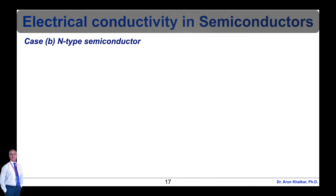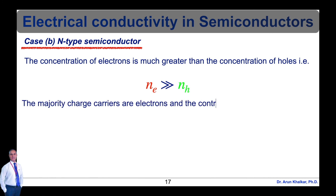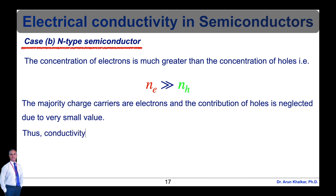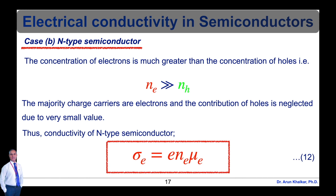Case B — N-type semiconductor: the concentration of electrons is much greater than the concentration of holes, so n_e >> n_h. The majority charge carriers are electrons, and the contribution of holes is neglected due to its very small value. Therefore, the conductivity of an N-type semiconductor is σ_e equal to e·n_e·μ_e, which is equation number 12.